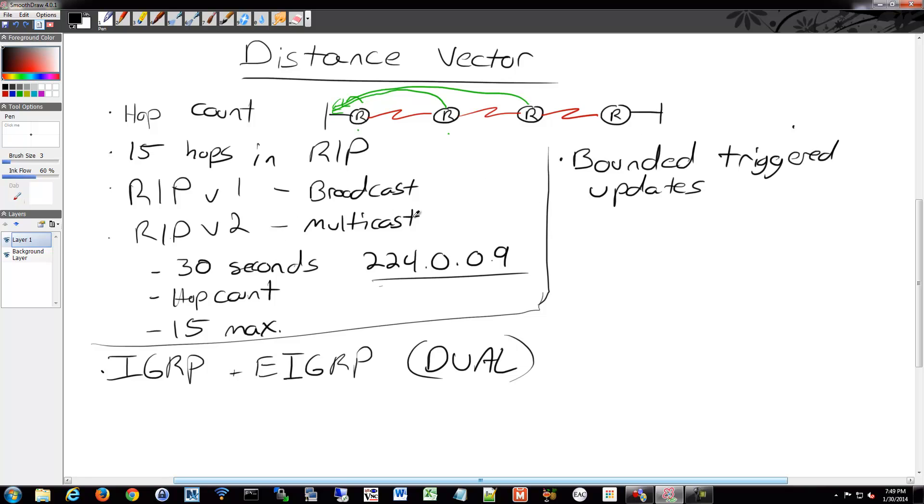That's different from RIP where it's every 30 seconds everyone gets a whole copy of my routing table and I'm done. So it's a bit more intelligent.